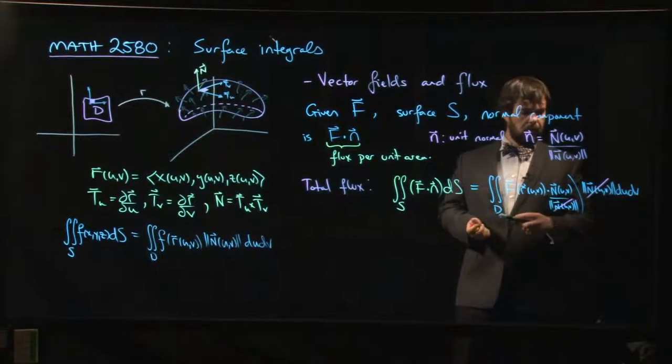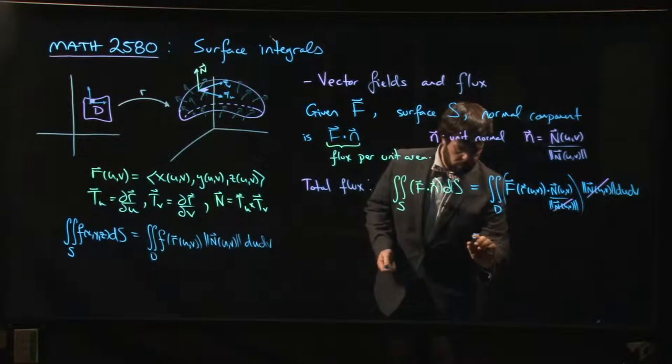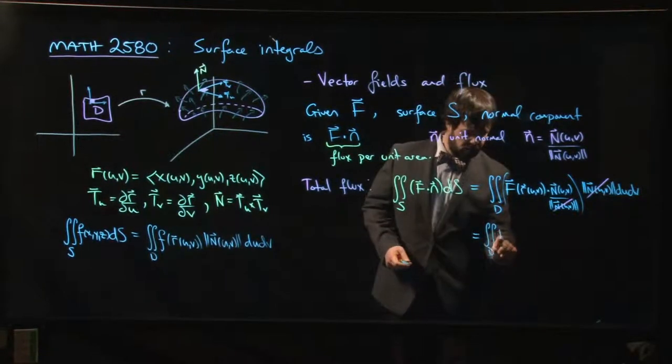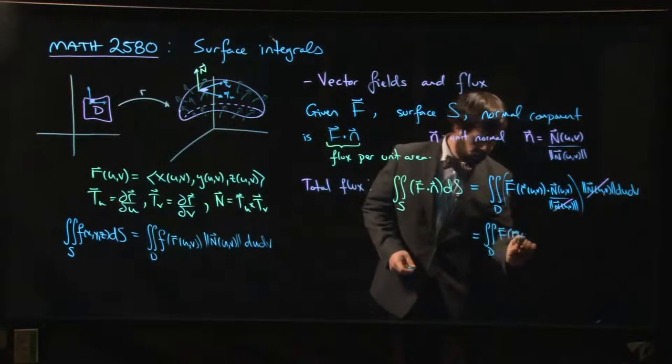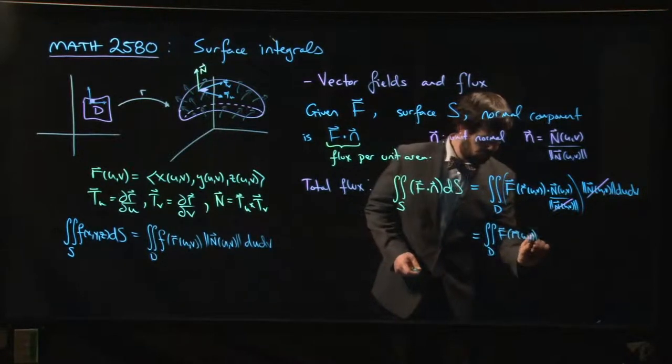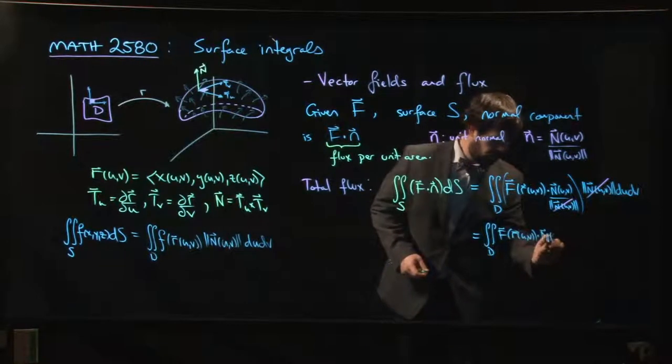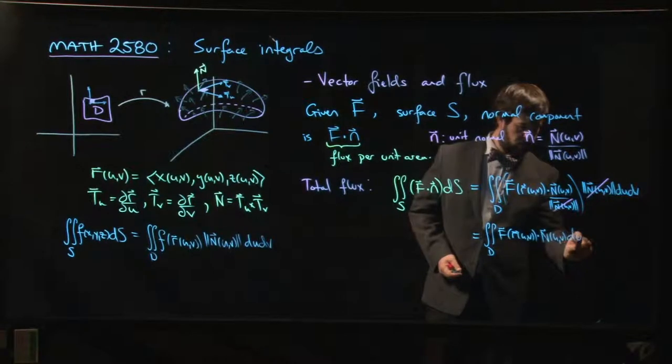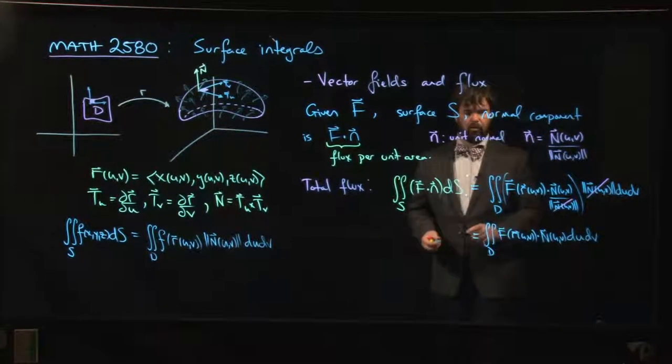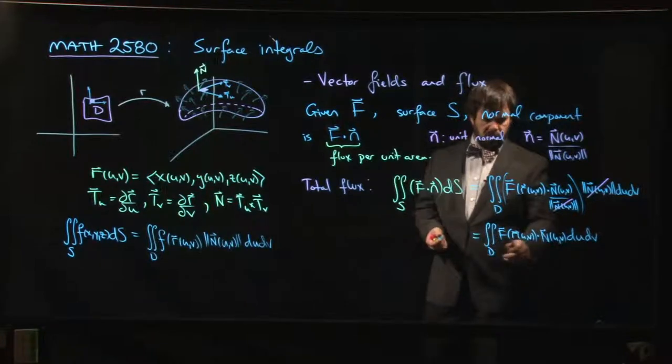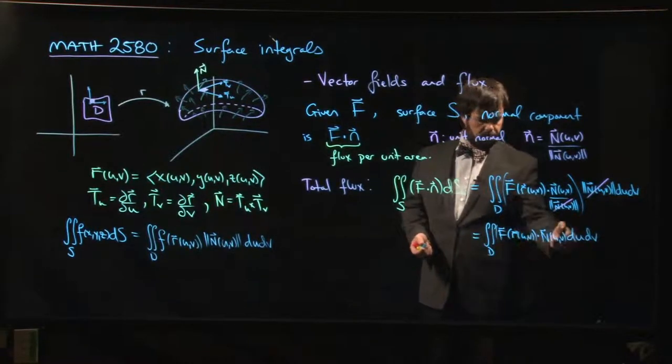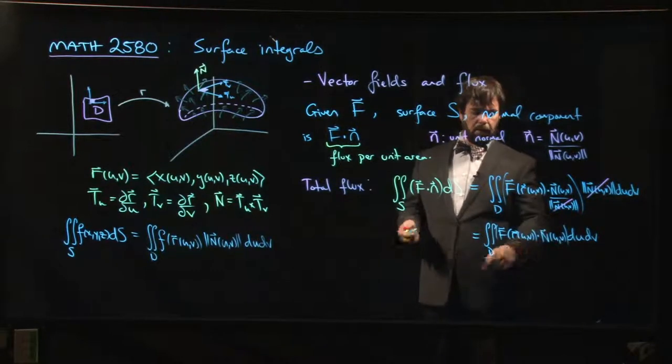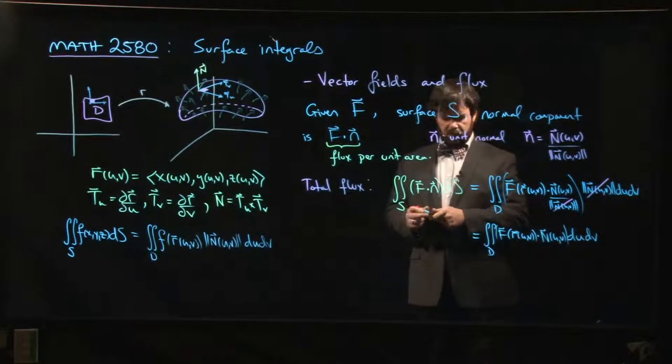What you get once you cancel is the integral over D of F of r(u,v) dotted with n(u,v), and then we integrate with respect to u and v. We parameterize our vector field, take the dot product—that gives us some function of u and v—and then we integrate.